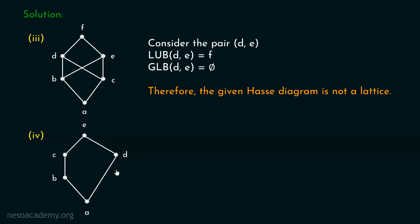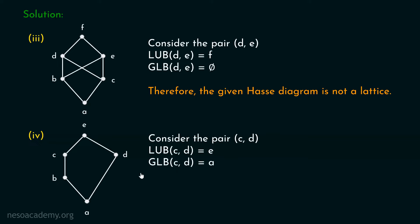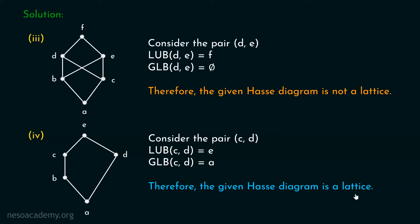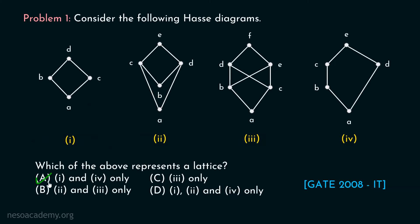Let's consider our last figure. Consider the pair C, D — these are incomparable elements. Least upper bound of C, D is E, and greatest lower bound of C, D is obviously A. Similarly, consider the pair B, D. Greatest lower bound of B, D is A, and least upper bound of B, D is E. For every pair of incomparable elements, greatest lower bound and least upper bound do exist. Hence, it is clear that the given Hasse diagram is a lattice. So now we have two Hasse diagrams which are lattices — it is clear that option A is the correct option: one and four only. These two Hasse diagrams represent lattices, while the other two do not.